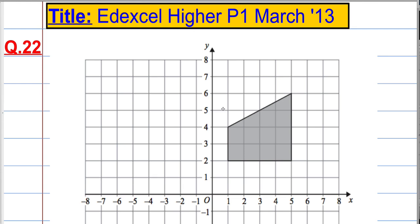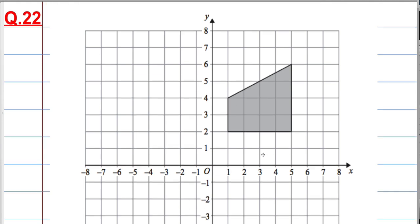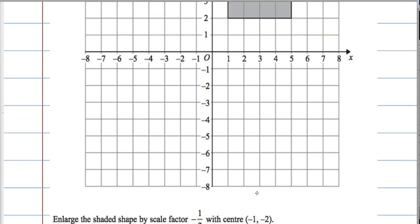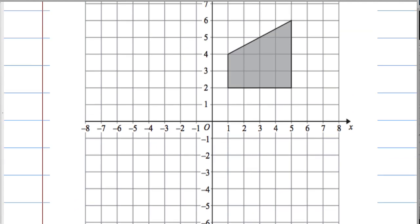Okay, question 22. So we've got another coordinate grid with a shape and we're asked to enlarge the shaded shape by a scale factor of minus a half with centre (-1, -2).